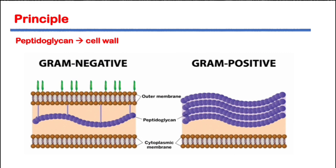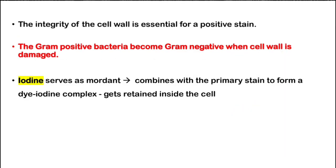The principle behind Gram staining: Gram positive bacteria have a thick peptidoglycan layer — 50 to 100 layers thick — so they hold the primary stain. Gram negative bacteria have a very thin peptidoglycan layer, so the primary stain gets decolorized. Instead of thick peptidoglycan, Gram negative bacteria have lipopolysaccharide, made up of lipid A, O-antigen, and O-polysaccharide. Integrity of the cell wall is essential for positive staining. Iodine serves as a mordant, combining with the primary stain to form a diiodine complex retained inside the cell.